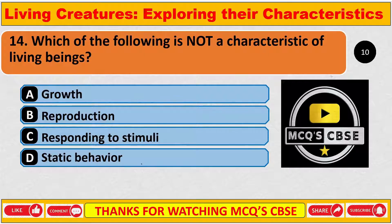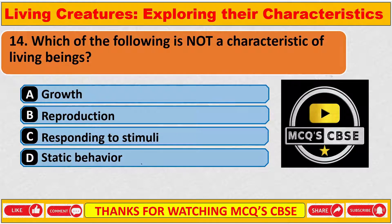Which of the following is not a characteristic of living beings? The correct answer is D — static behavior.